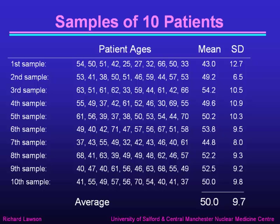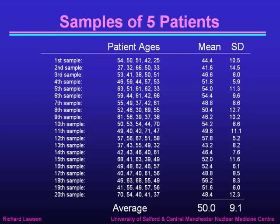Let's take smaller samples — just 10 at a time. Now the mean varies quite a lot, from 43 at the smallest to 54.2 at the largest, and the standard deviation varies from 6.5 to 12.7. But the average of the mean ages is 50.0, and the average standard deviation is 9.7. If we go to the extreme and use groups of just 5 patients, we get an even greater spread of means, but the average mean is still 50.0. For the standard deviation, we get values from 6.0 up to 14.5, but the average standard deviation is 9.1.